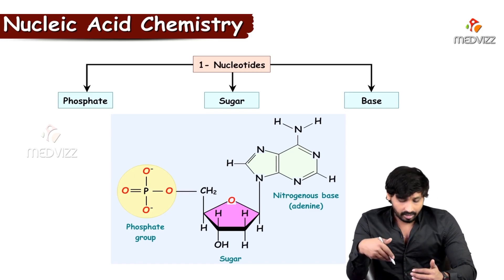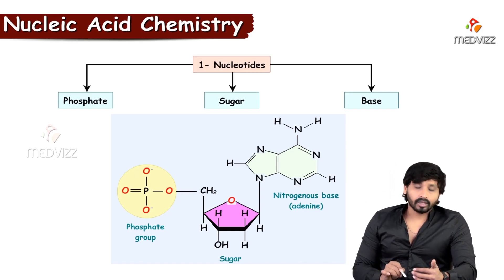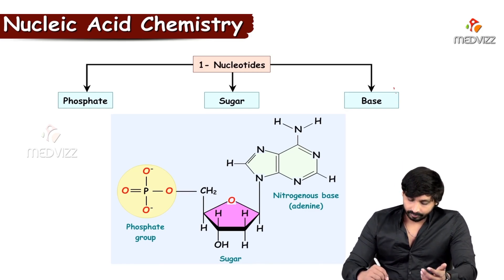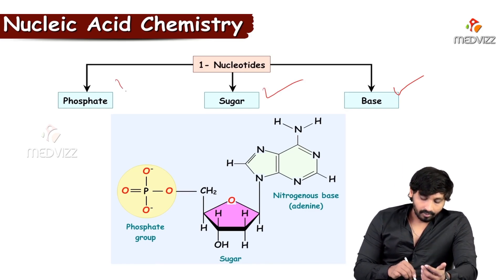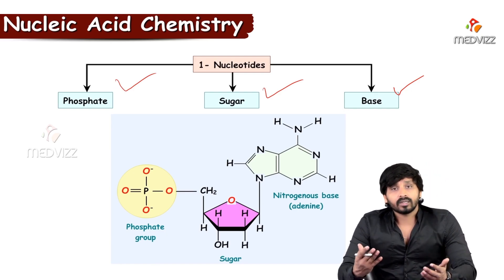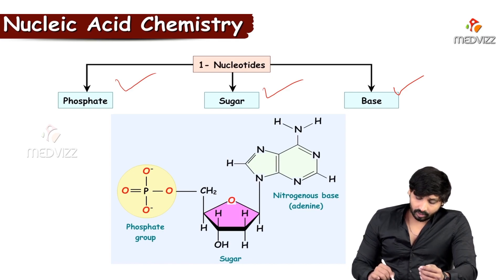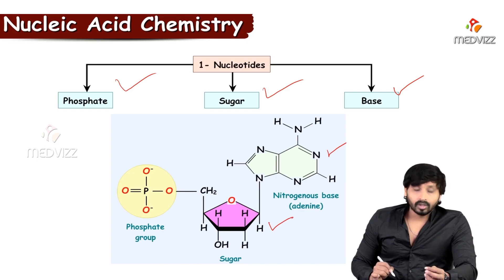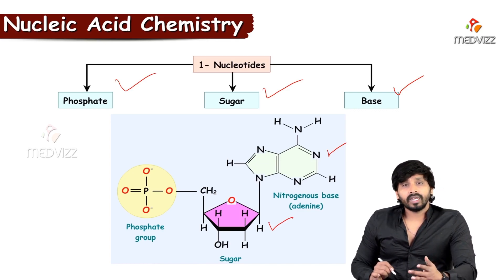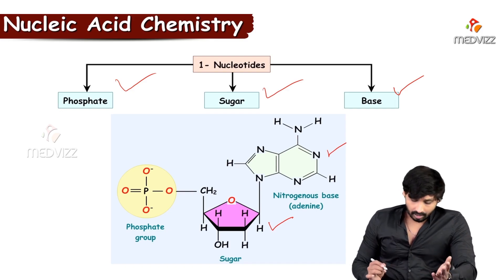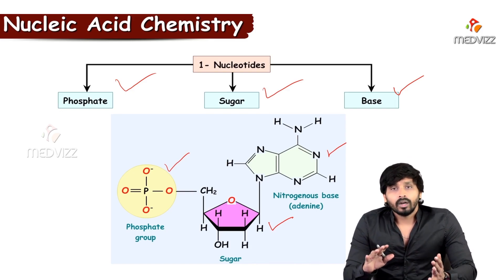Here in this flow chart, you can see the composition of nucleotides. They are made up of three parts: one is base, the other is sugar, and phosphate. We will see what are the types of bases and what are the types of sugars involved in the formation of nucleic acids. The nitrogen base shown here as an example is adenine. Basically, these three substances — base, sugar, and phosphate — make a complete nucleotide. The types of sugar and base vary based on the type of nucleic acid.